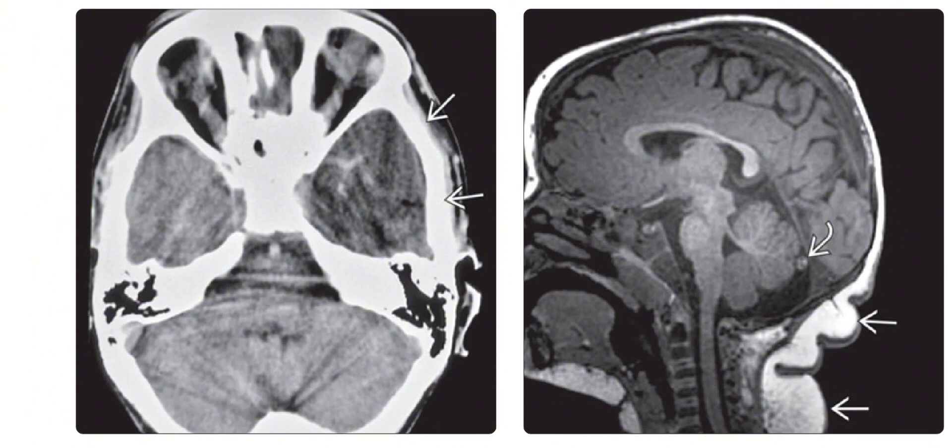On the right is the sagittal T1-weighted MRI showing large subcutaneous lipomas in the upper neck and the occipital area of the scalp. Note the small lipoma immediately behind the cerebellar protuberance.